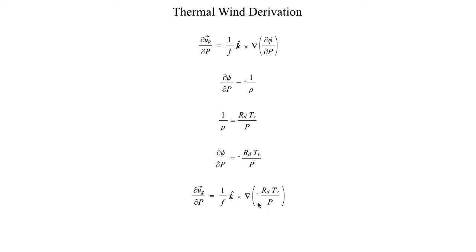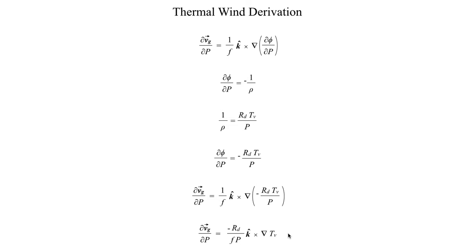Here the gradient operator only operates in the horizontal direction when working with geostrophic wind — we don't care about the vertical pressure gradient, only the horizontal pressure gradient. So we can pull the pressure p out of the gradient operator, and since r_d is also a constant, we can pull that out as well. This gives us: dvg/dp = −(r_d / (f·p)) k-hat × ∇T_v. Now we're starting to get a mathematical representation of what we looked at in the previous segment — vertical wind shear on the left related to a horizontal temperature gradient on the right.